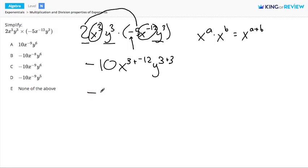Let's simplify those exponents. 3 plus negative 12 is negative 9, and 3 plus 3 gives us 6. So our simplified answer is negative 10 times x to the negative 9th times y to the 6th.